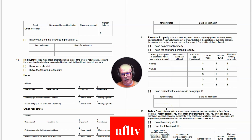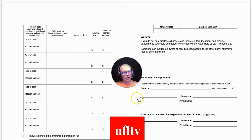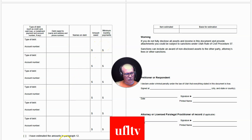Paragraph 12 covers debts and obligations. If you have no debts, check that box — otherwise, identify them by type of debt, creditor, names on the debt — whether it's just you, you and your spouse, or you and someone else — amount owed, and monthly minimum payments. The table on the next page asks for the type of debt, account number if applicable, creditor, debtors, balance owing, and monthly payments. If you had to estimate, note that here as well.